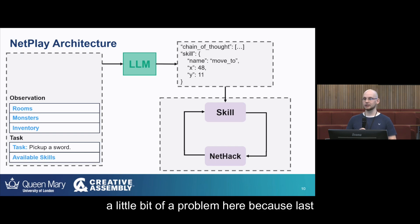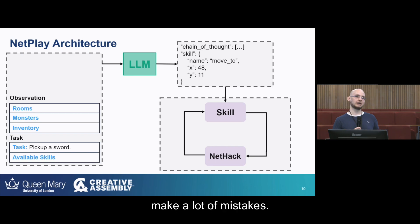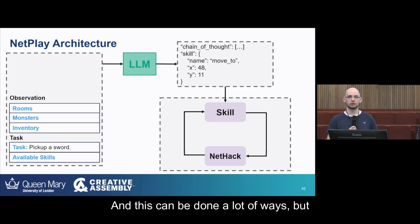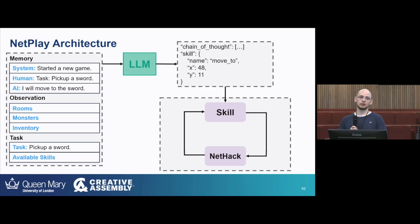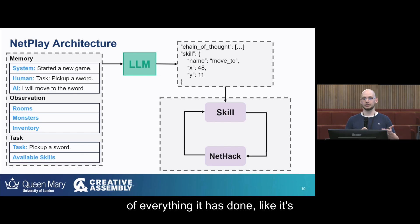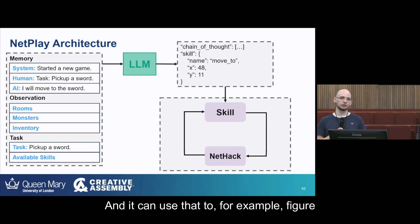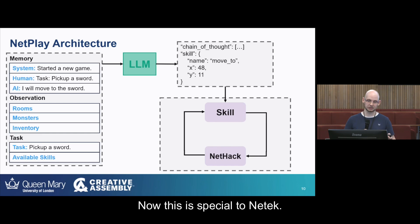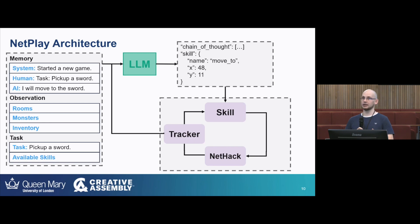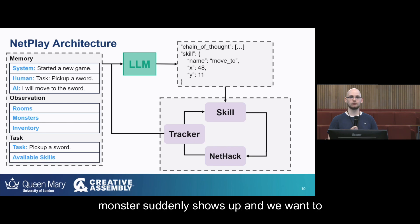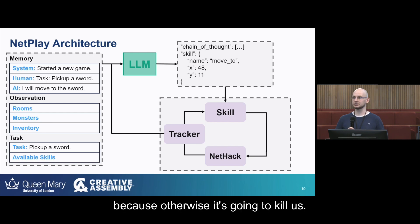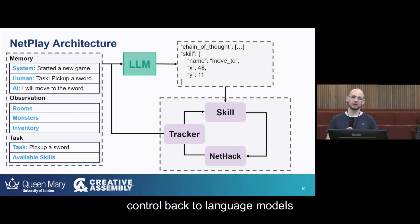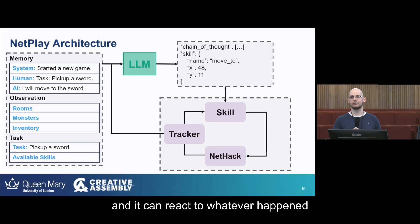There's a problem because large language models are not perfect and may make many mistakes, so we need a feedback loop so the language model can correct itself. I've done this by providing memory — the language model receives the memory of everything it has done: its thoughts, game messages, and everything else — so it can figure out if it's stuck, though it doesn't always do that. This is special to NetHack: a lot of sudden things can happen, such as a monster suddenly showing up. I have a tracker that detects unexpected events, interrupts the skill, and gives control back to the language model so it can react immediately.